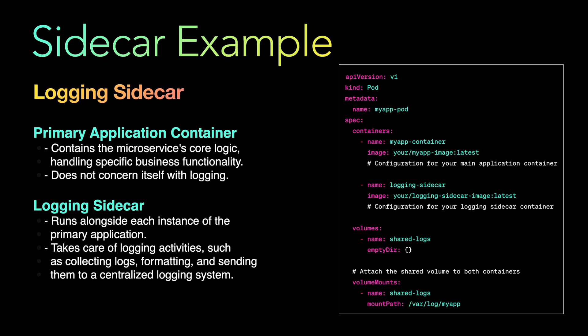The primary application, the my-app container, writes logs to the shared volume, and the logging sidecar tails those logs and writes them to a file. This is a simple example of a logging sidecar using Kubernetes — you have one pod which primarily has two containers: the primary application and the sidecar application.